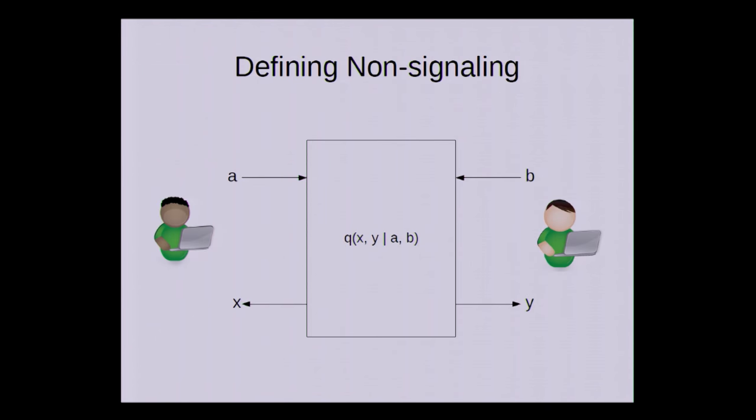Before getting into that, I need to define more formally what non-signaling means. So this box here is a bipartite non-signaling system, and it has, on the left and on the right, one input and one output. And what the non-signaling condition means is that the input-output behavior on the left is independent of what goes in on the right, and vice versa.